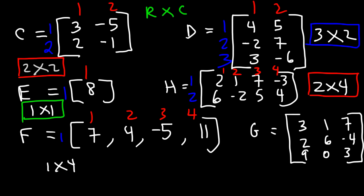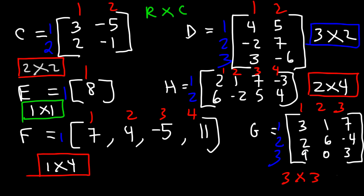Finally, matrix G is another square matrix. It has three rows and three columns, so that's a 3 by 3 matrix. Now you know how to determine the order of a matrix and how to identify the elements within a matrix.